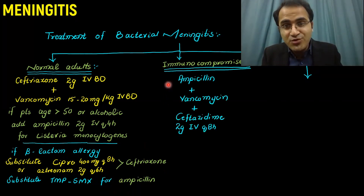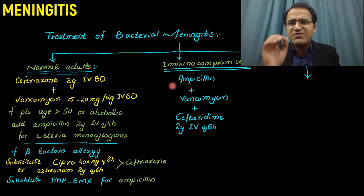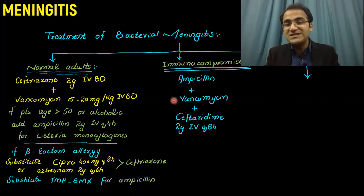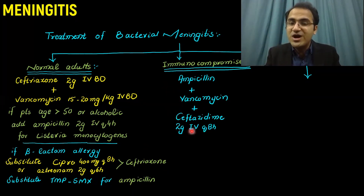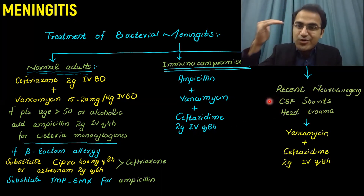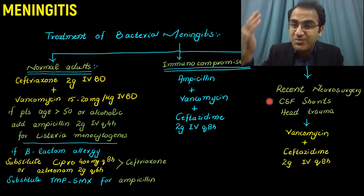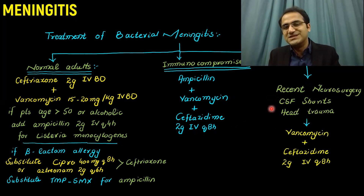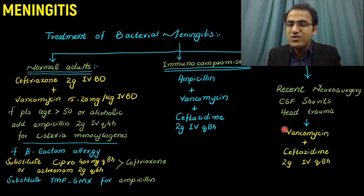For immunocompromised patients, give ampicillin to cover Listeria monocytogenes, plus vancomycin and ceftazidime 2g IV. For patients with recent neurosurgery or shunt placement, give vancomycin with ceftazidime to cover Staph aureus.